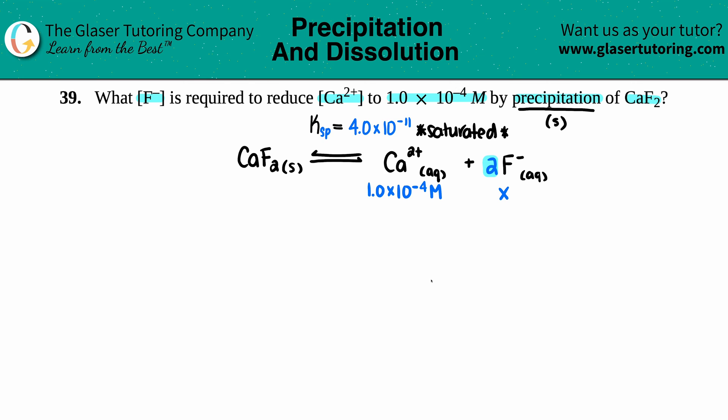Now let's write in the Ksp. The general Ksp formula is just equal to the products raised to the coefficients. So let's do it for ours. Ksp equals concentration of calcium [Ca2+] times the [F-]. We just have to take into consideration those coefficients. There's a 2 in front of the F-, so I have to square that F- concentration.